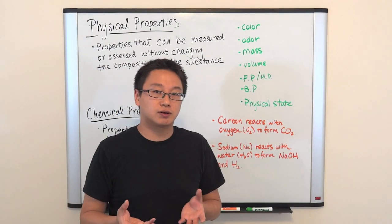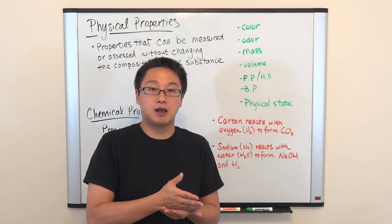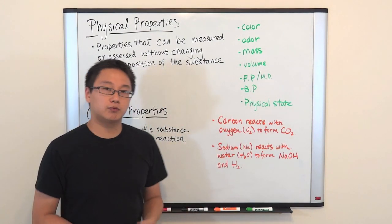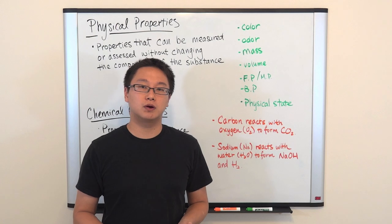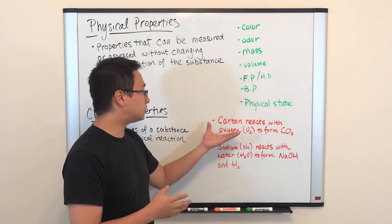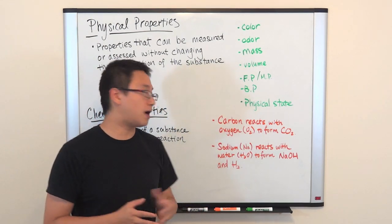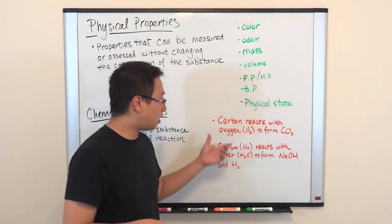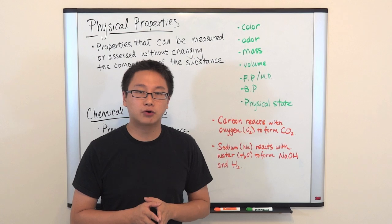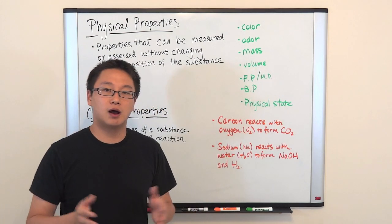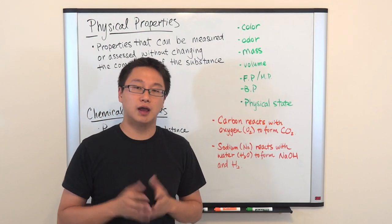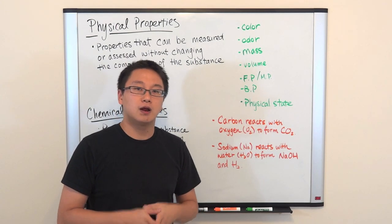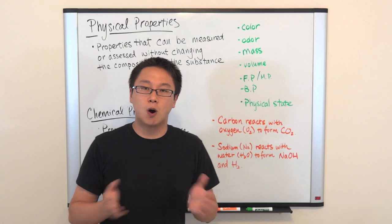Now for chemical properties — we describe a substance's reactivity and how it reacts in a chemical reaction. For example, carbon reacts with oxygen to form CO₂. This sentence describes the reactivity of carbon with oxygen — if you put carbon and oxygen together, with the addition of energy, they will react to form CO₂.